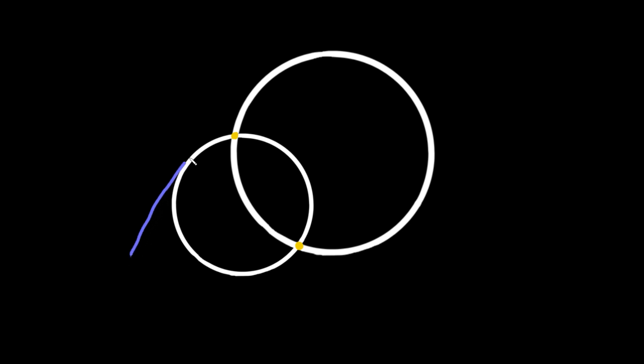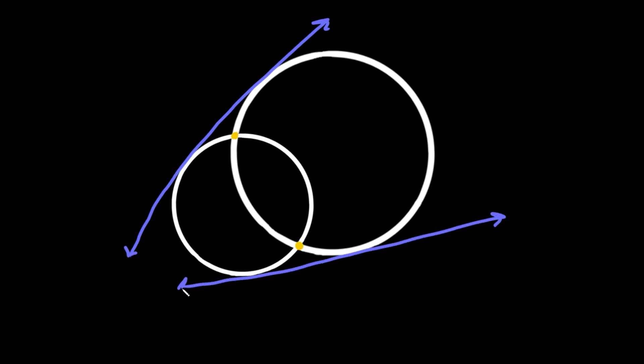The final case is where two circles intersect at two points — they are overlapping. Overlapping circles have two common tangents, and both simply run on the outsides of the circles. Drawing the centers and the line connecting them confirms that neither tangent crosses that line, so both are external tangents.